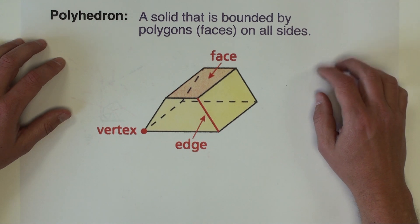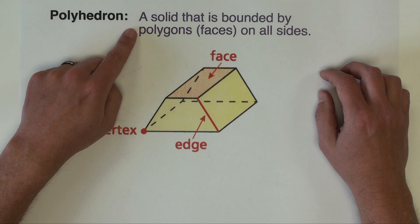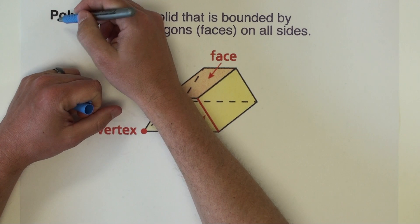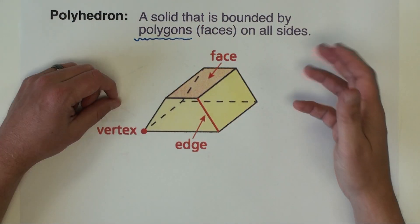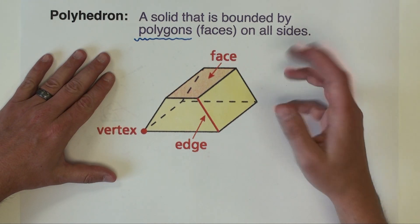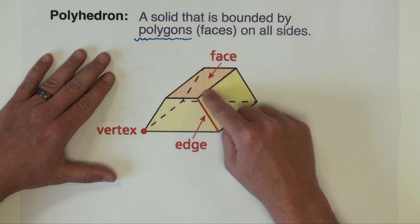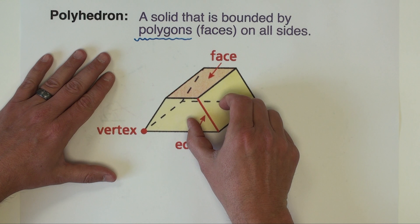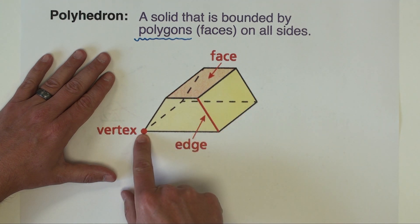Okay first thing we want to start with is what's a polyhedron. A polyhedron is simply a solid that is bound by polygons on all sides. That's important. In order to be a polyhedron all the sides have to be polygons. In a polyhedron we've got some different vocabulary that we need to be accustomed with. The faces are simply the sides of the polyhedron. Where two faces or two sides meet we have edges. Where edges come together and meet we have vertices or singular we have a vertex.